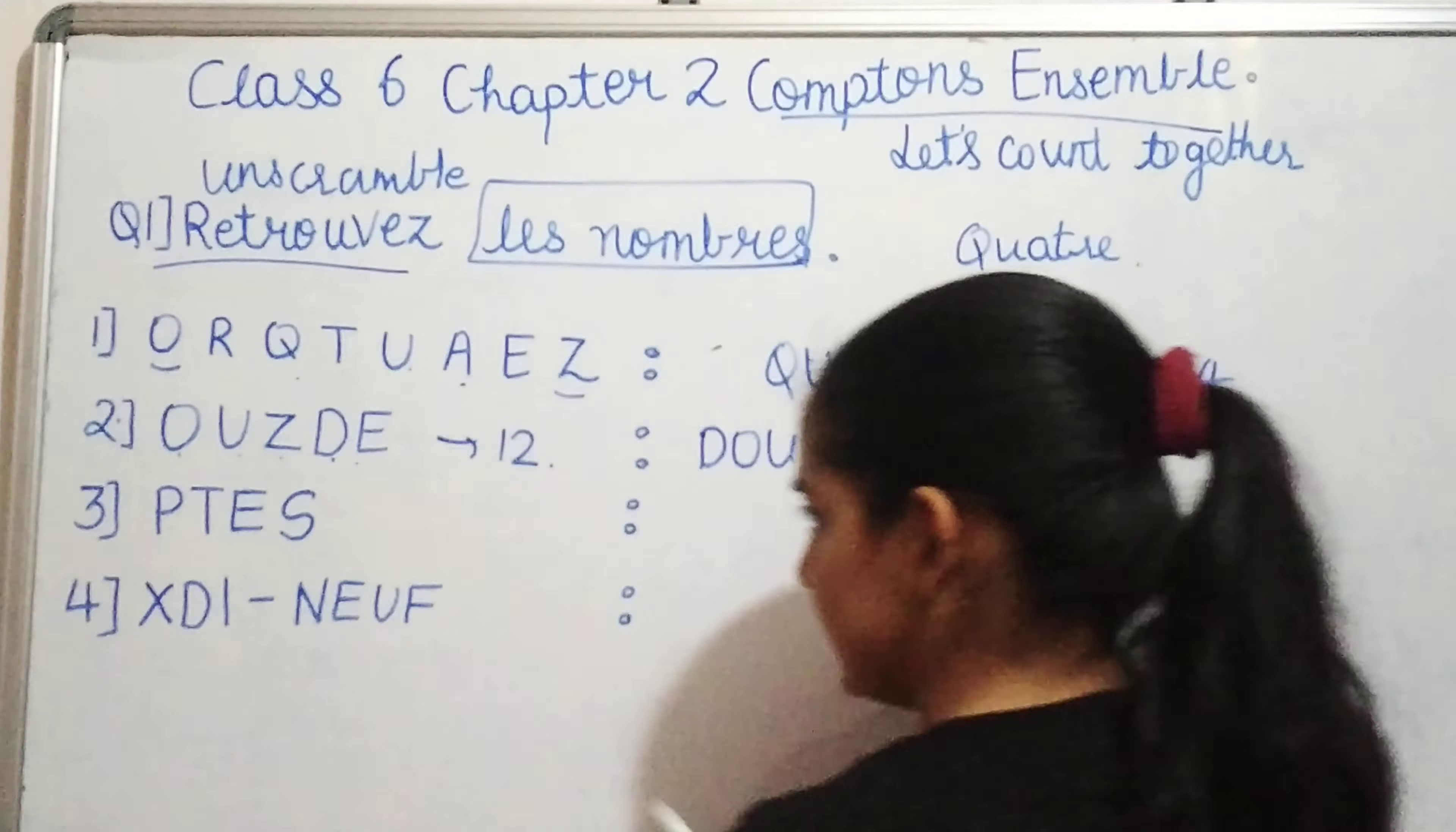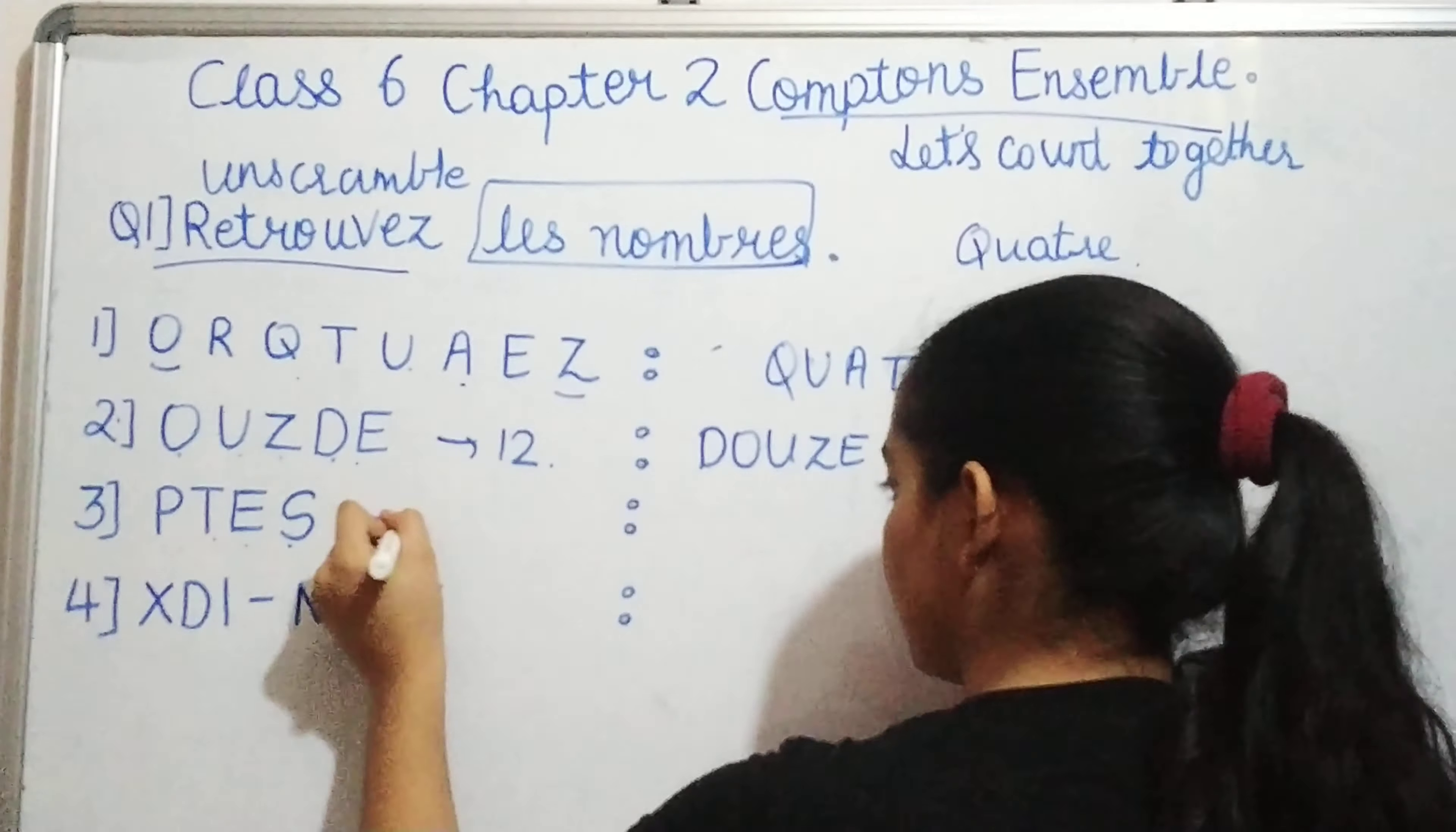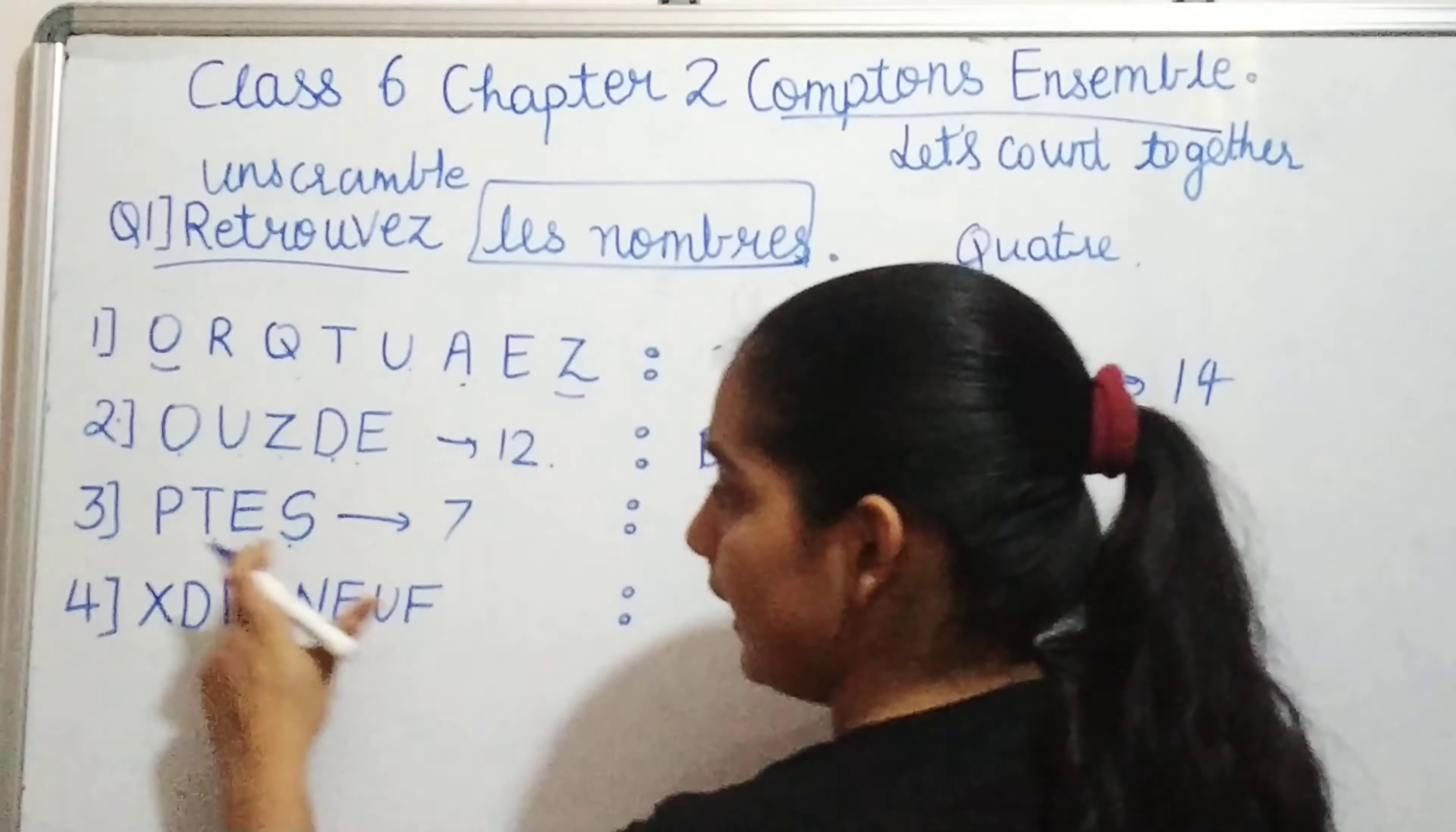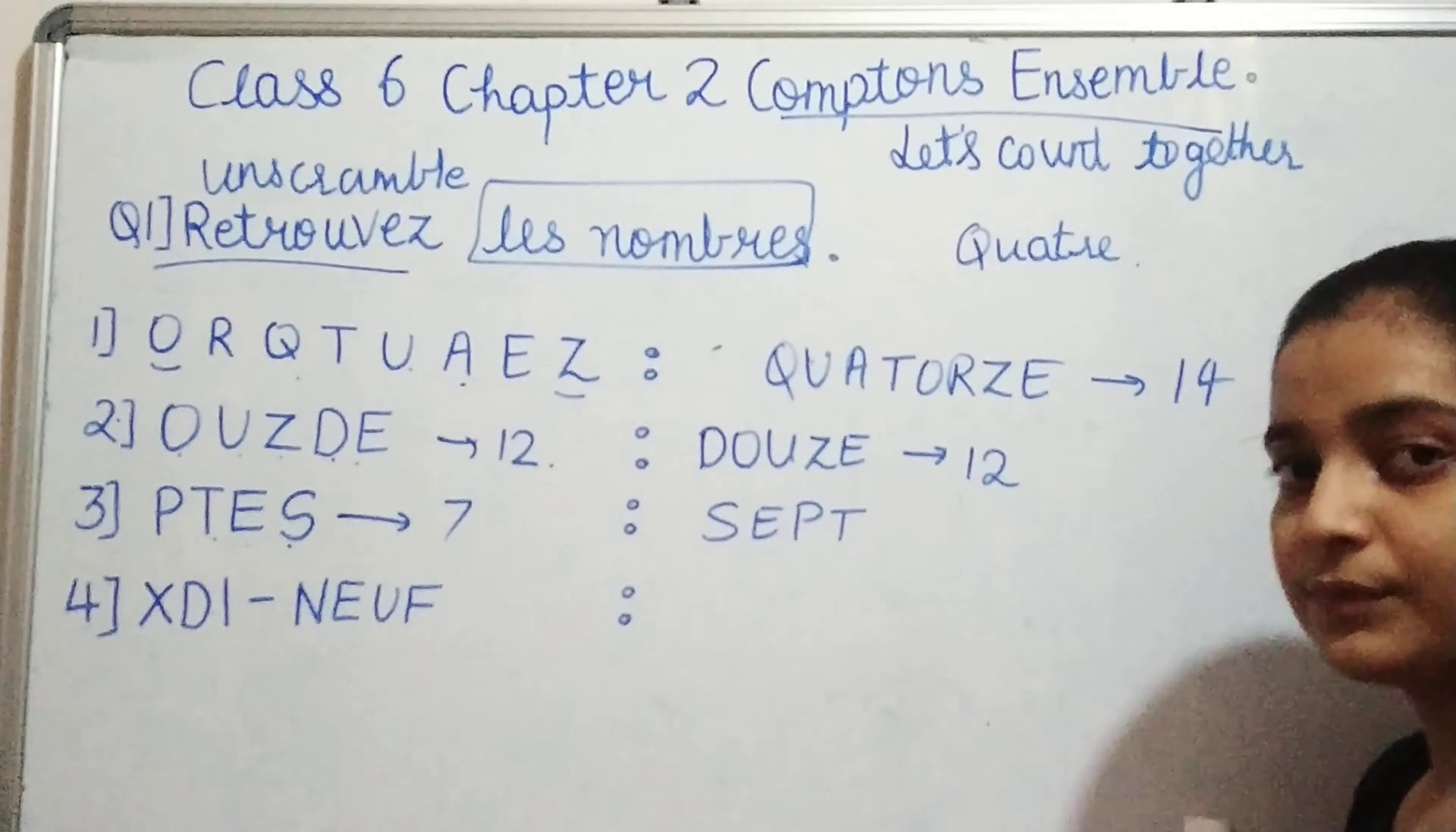Now, coming to the next, that is P, T, E, S. Again, you can simply see that this is 7. So, we will write S, E, P, T. Here also S, E, P, T.